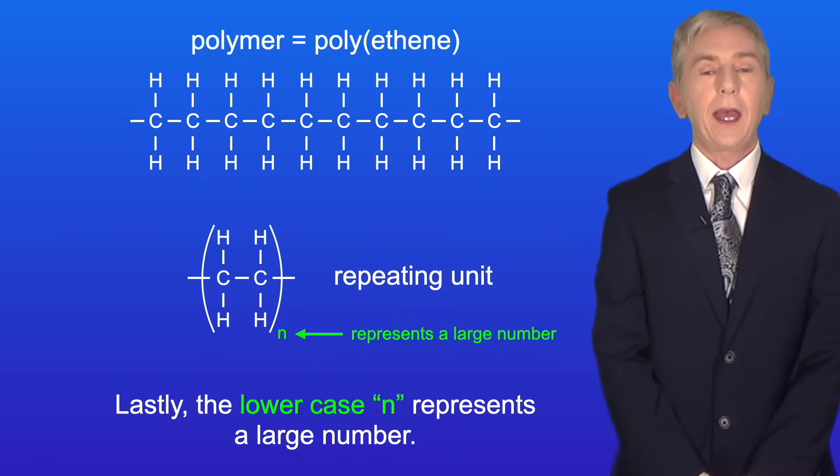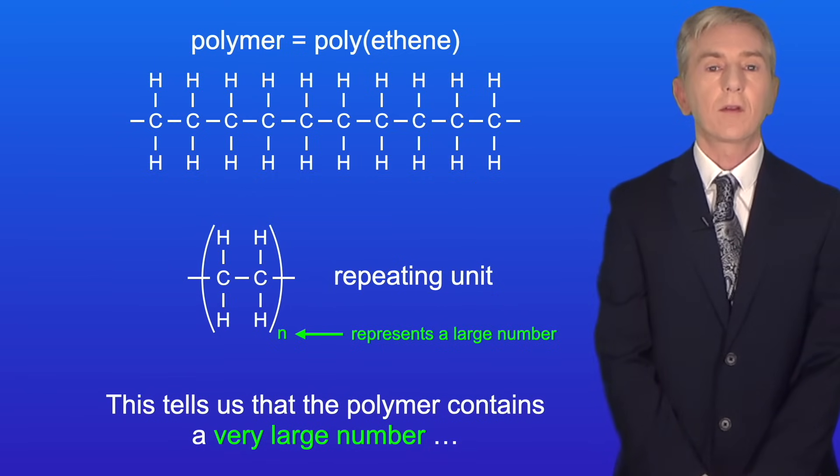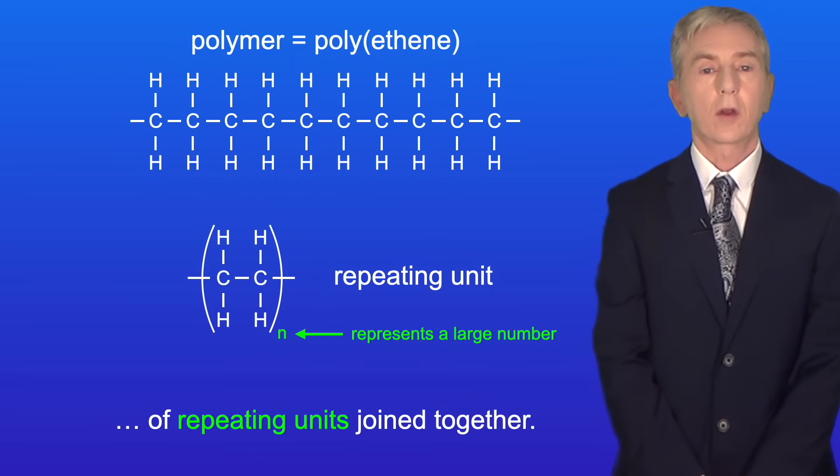Lastly the lower case n represents a large number. This tells us that the polymer contains a very large number of repeating units joined together.